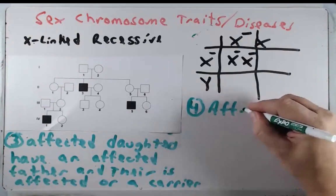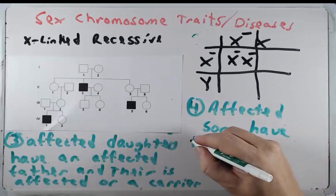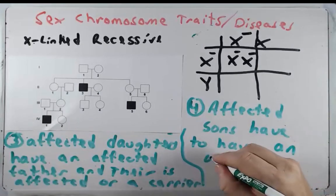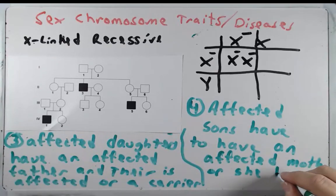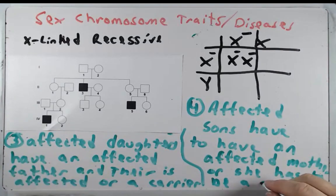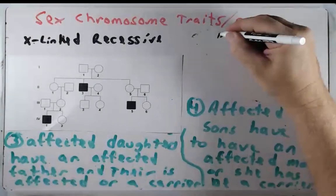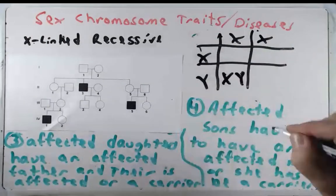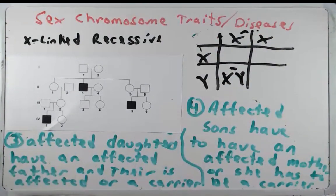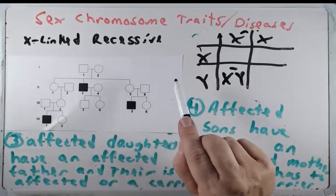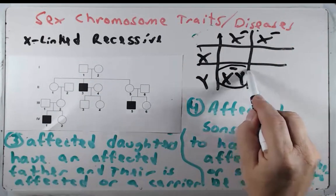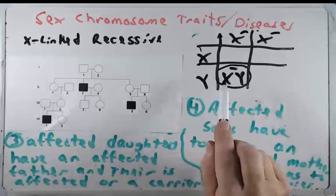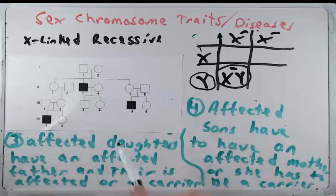Affected sons, on the other hand, have to have a mother who is affected or a carrier. If they were to have a son who was affected — meaning he has a mutated X chromosome — he has to get that from mom. Mom has to either be a heterozygote carrier or homozygous recessive. An affected son has to get their mutated X chromosome from mom; he cannot get it from dad because dad only provides a Y chromosome.